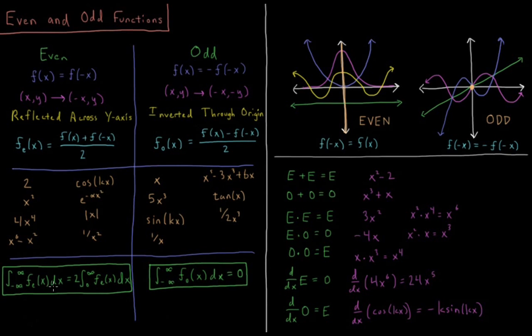If you know you have an even function, you can save yourself some work by integrating from 0 to ∞ and multiplying by 2, instead of doing the integral from -∞ to ∞.